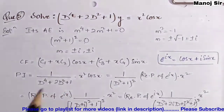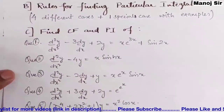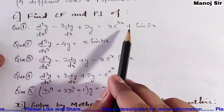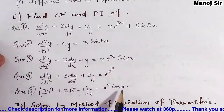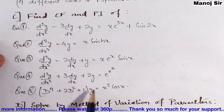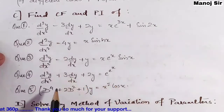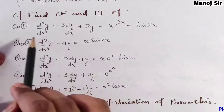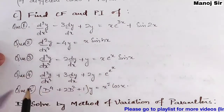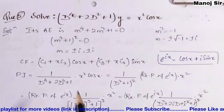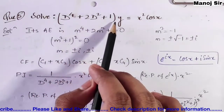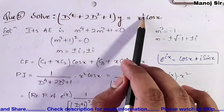This is video number 15, and in this video we are going to solve the fifth problem. If you go to the playlist, you can find these five problems — in videos 11, 12, 13, 14, and this video, number 15. The question says: solve (D⁴ + 2D² + 1)y = x² cos x.